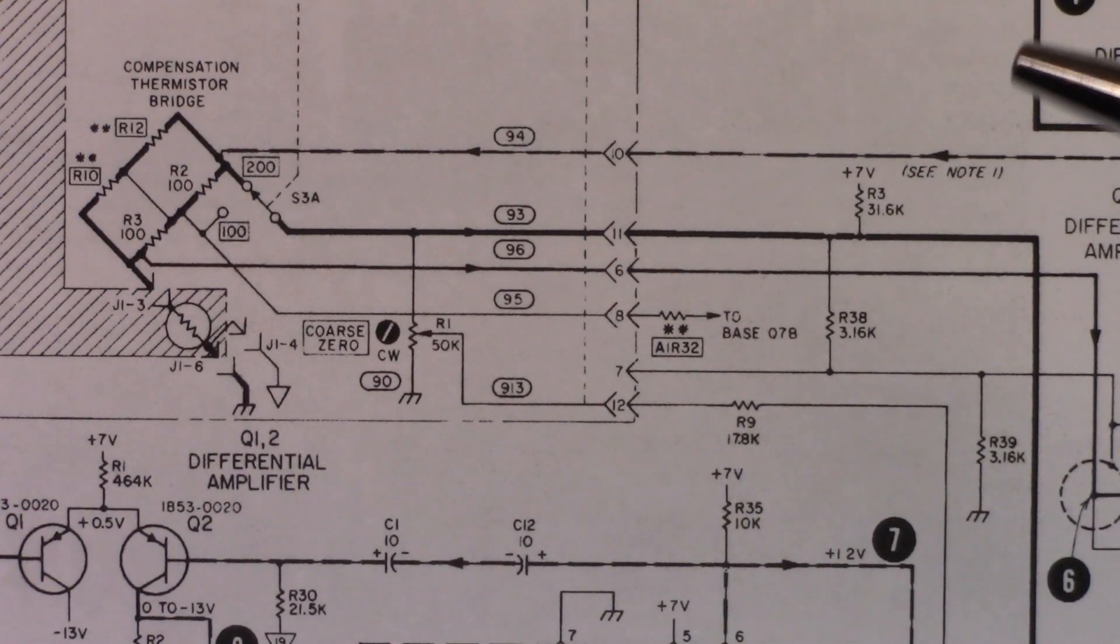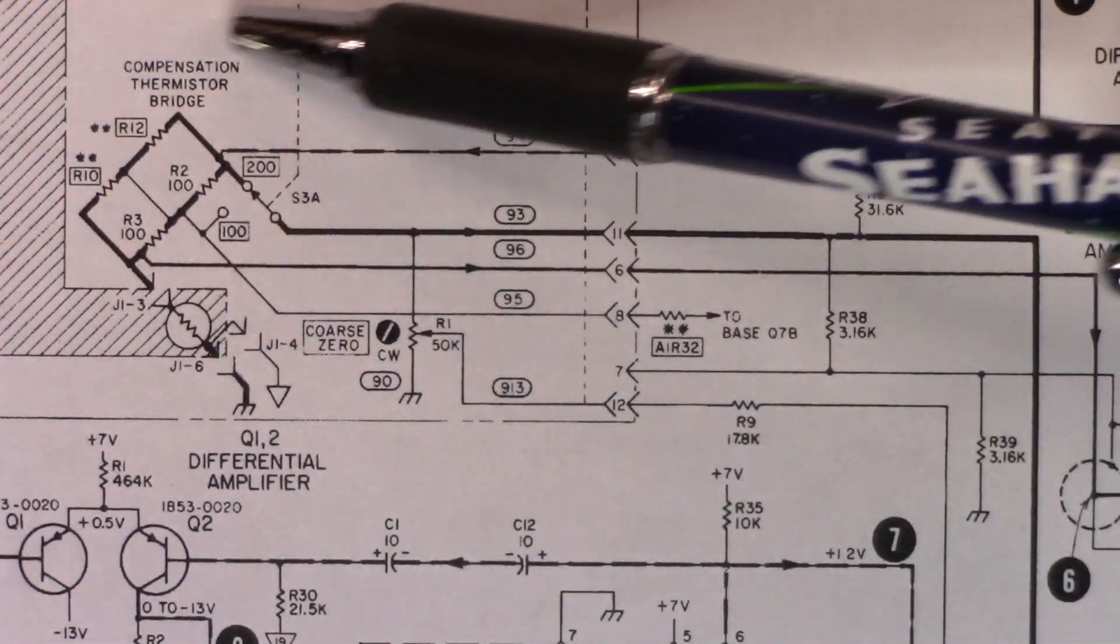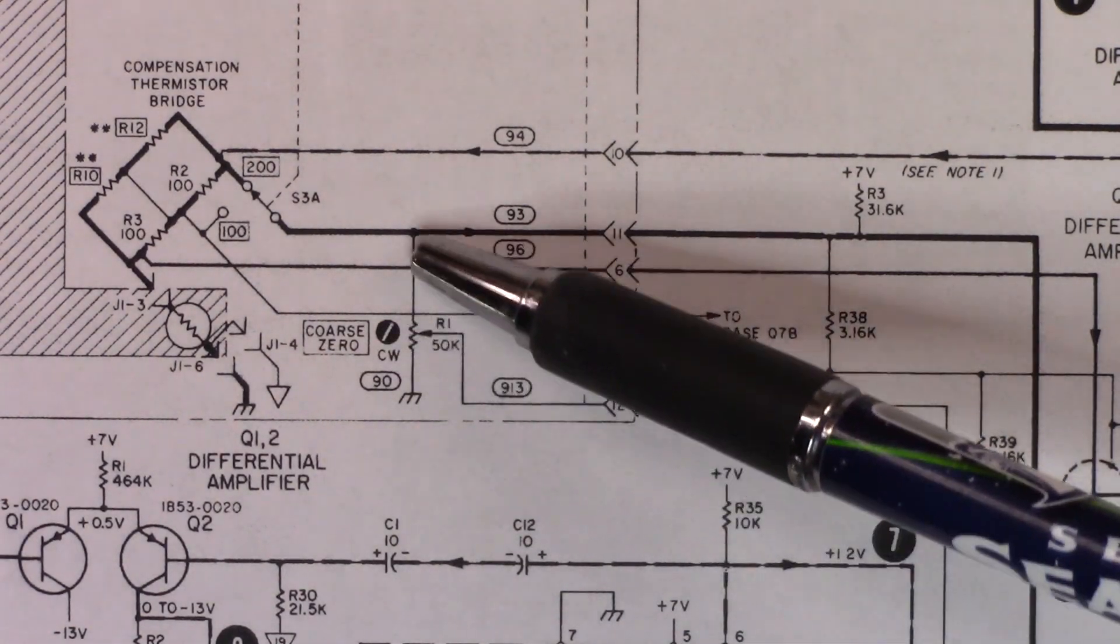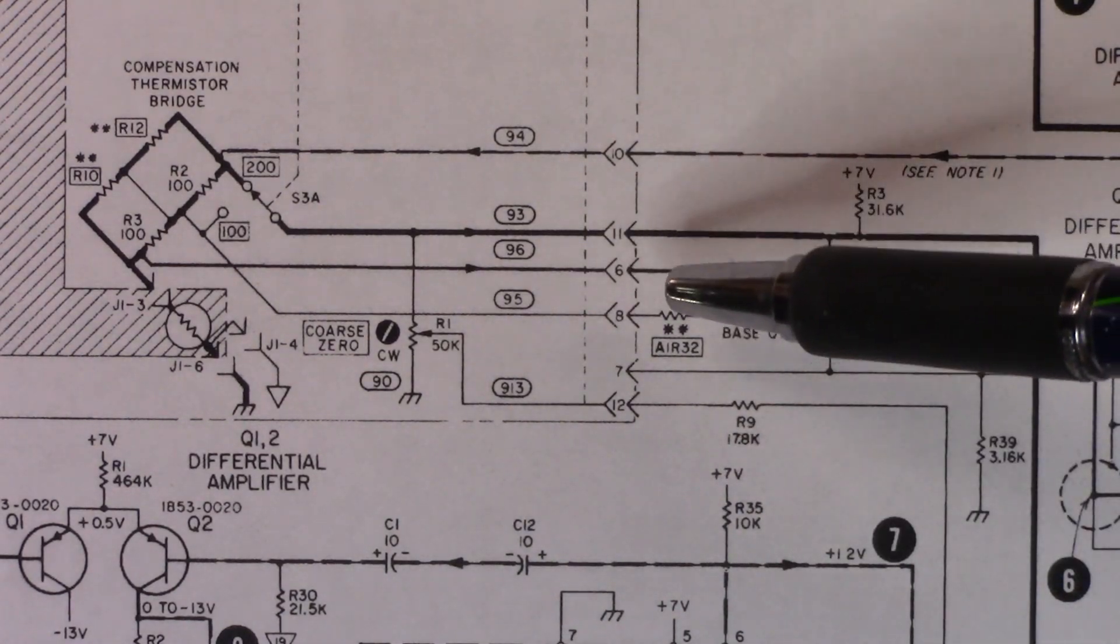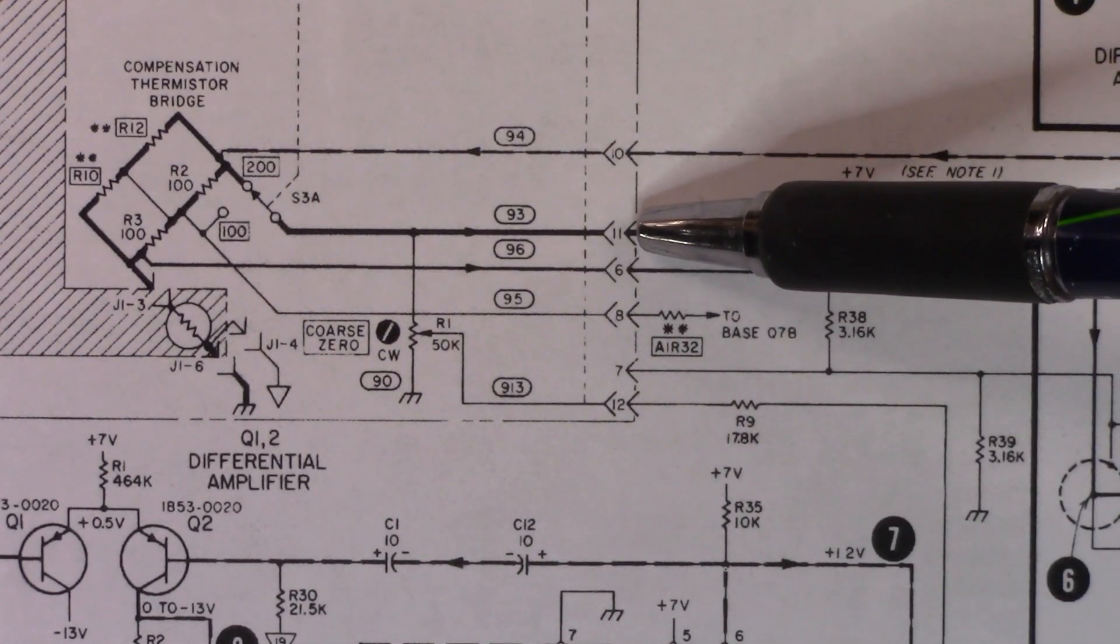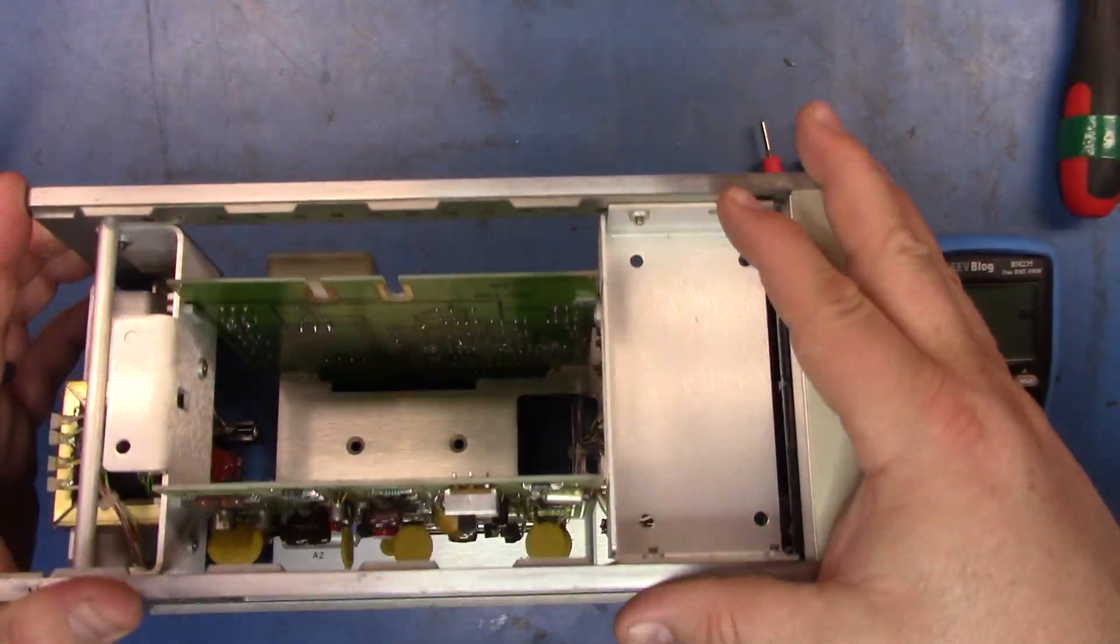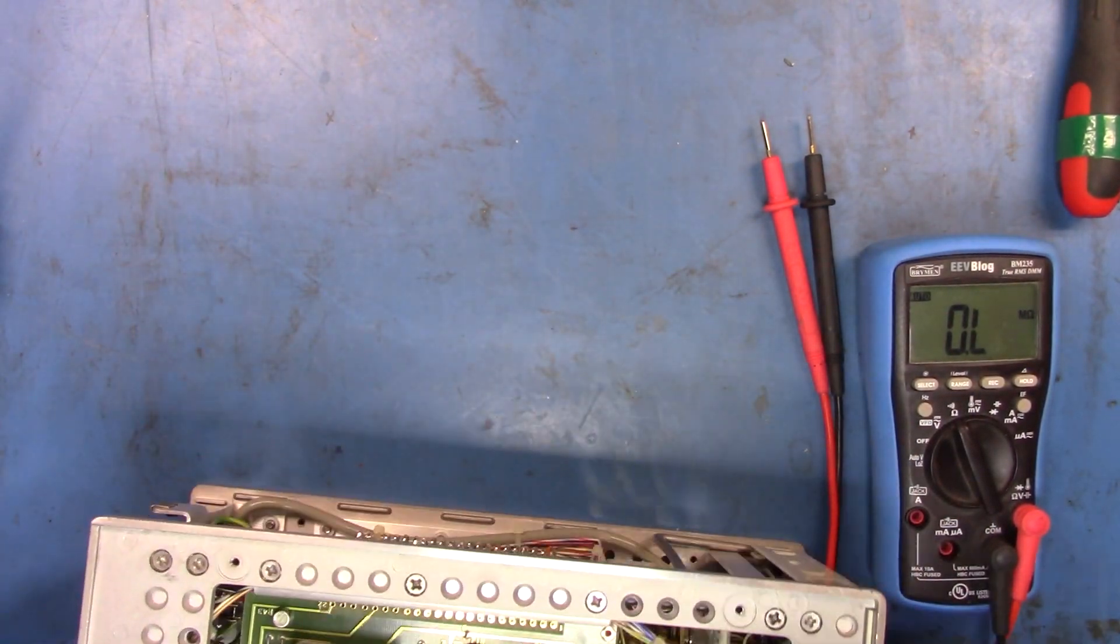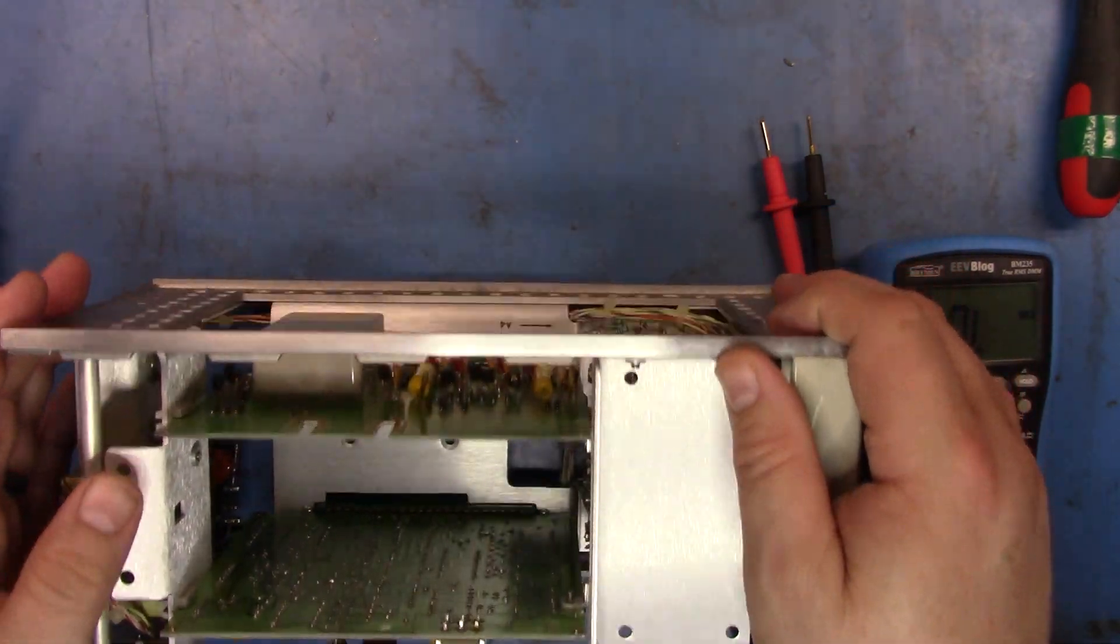Okay. Here we can see the RFN, the compensation thermistor bridge here. And basically course zero comes across that and then appears on pins 11 and 12 of the card edge connectors. So let's just pop out card A1, which is this guy here. It's got the item on it.